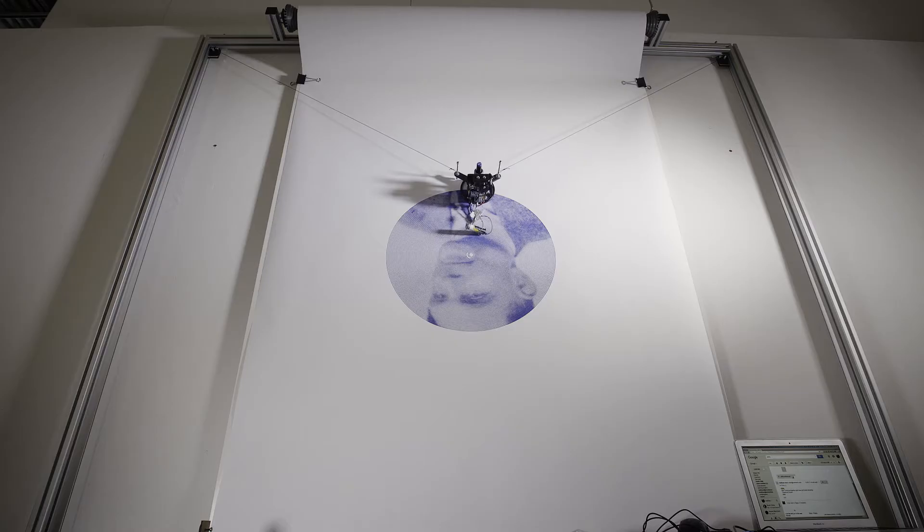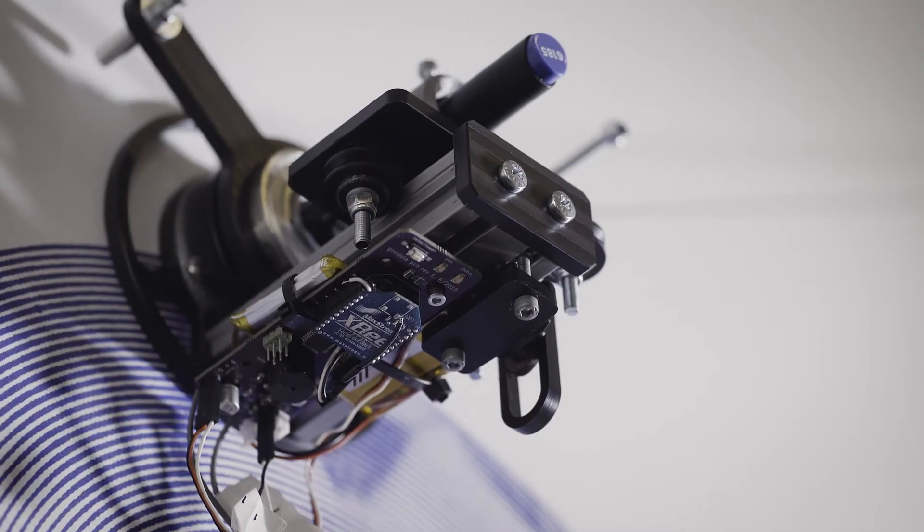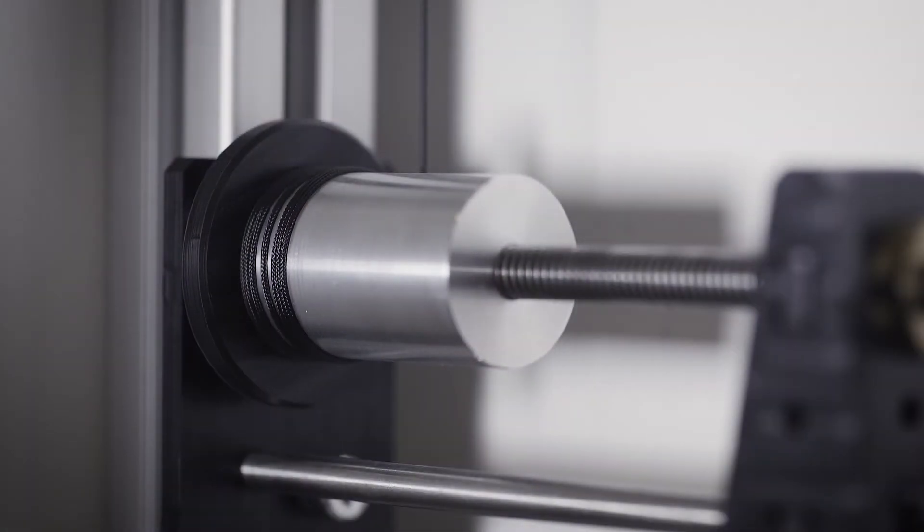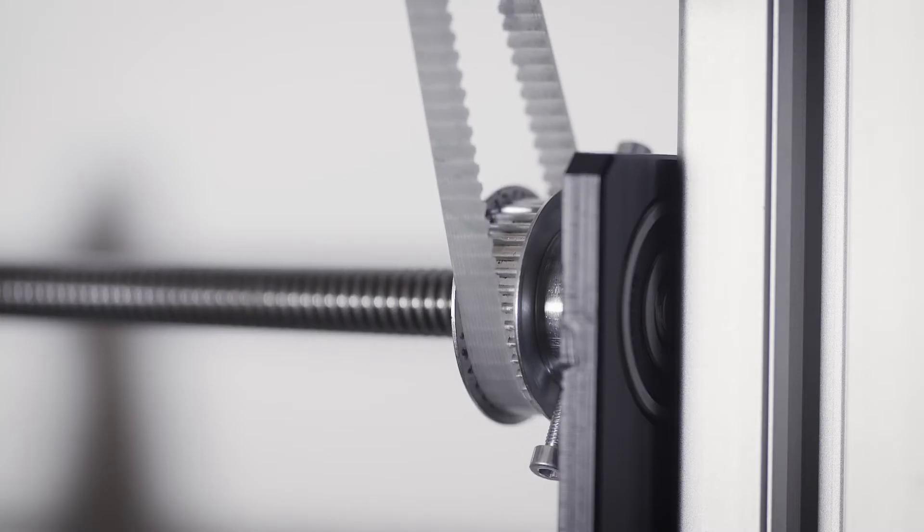If we start with the mechanical side, it's very simple. It's just two strings that go up and then come down in a V - that's why some people call them a V plotter. In the middle you have something holding a pen, and by having two motors that can change the length of the strings, you can move anywhere on the canvas.